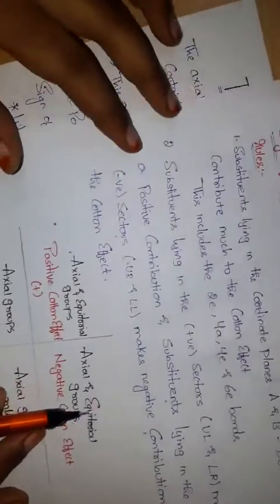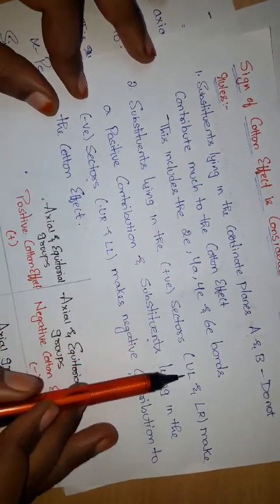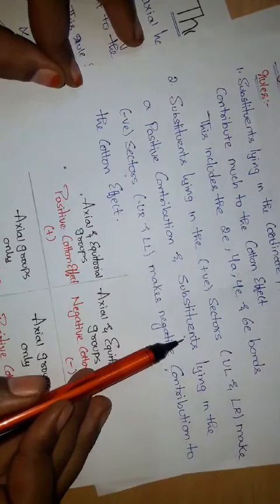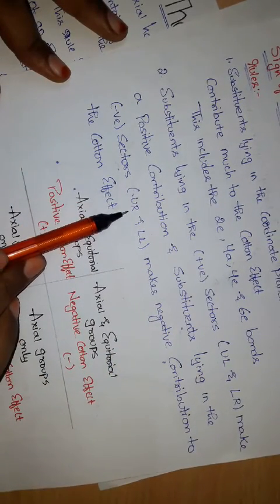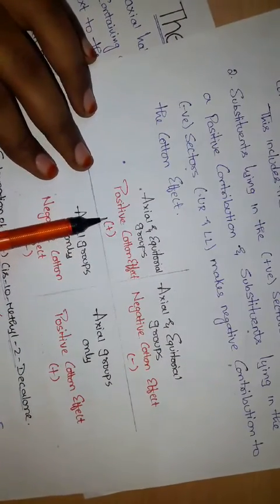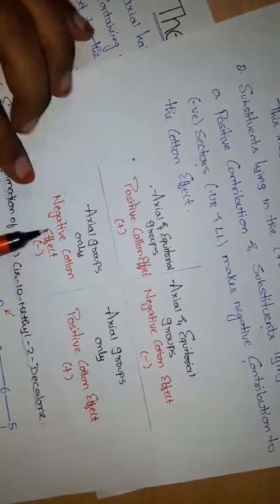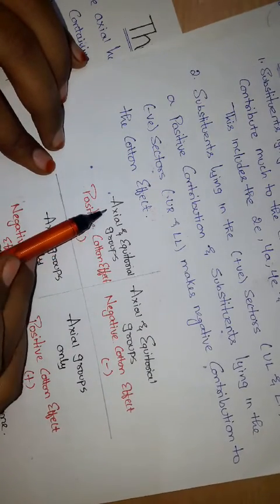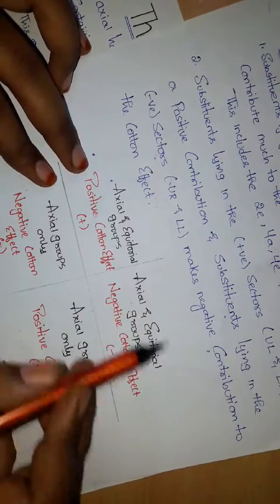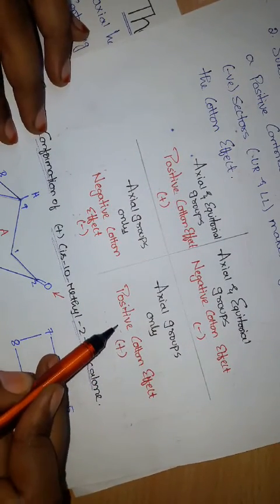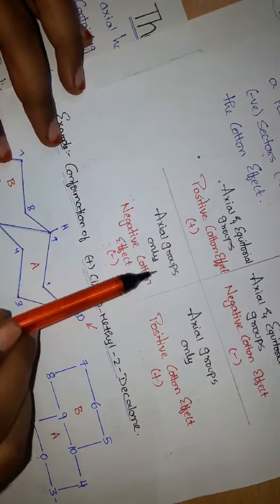The next rule: substituents lying in the positive sector — that is, upper left and lower right — make a positive contribution, and substituents lying in the negative sector — upper right and lower left — make a negative contribution to the Cotton effect. Positive Cotton effect arises from axial and equatorial groups in those quadrants, while only axial groups in opposite quadrants show negative Cotton effect.